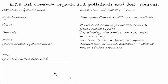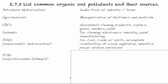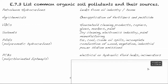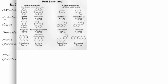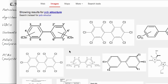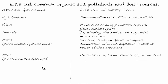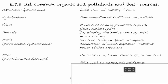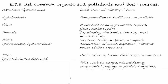PCBs are polychlorinated biphenyls. Polychlorinated means many chlorines, bi means two, and phenyl means benzene rings. These come from electrical or hydraulic fluid leaks or incinerators.